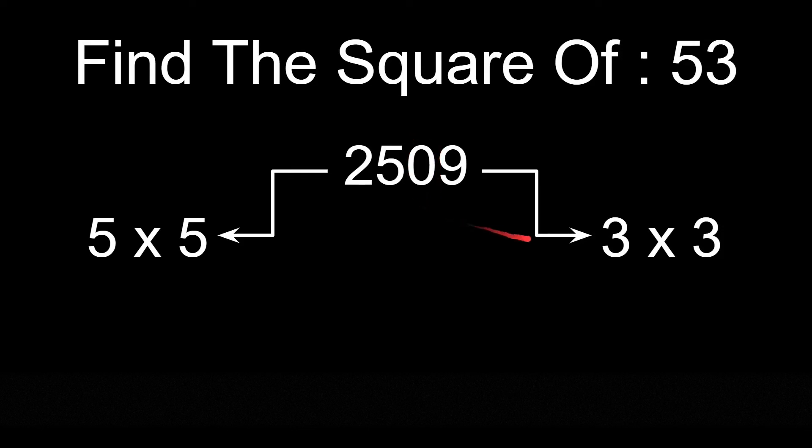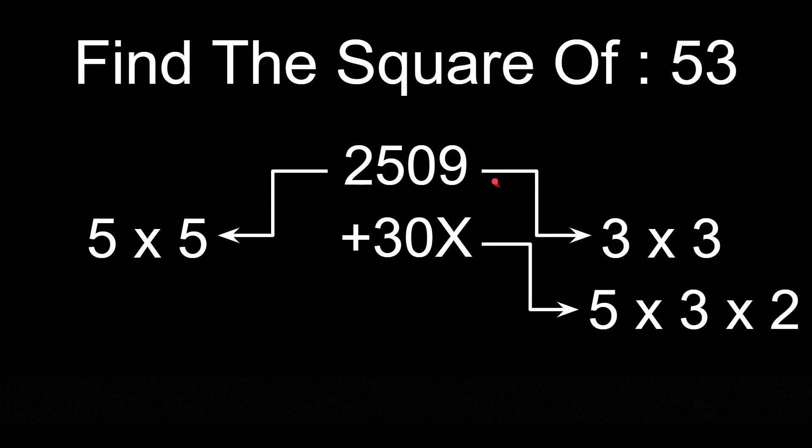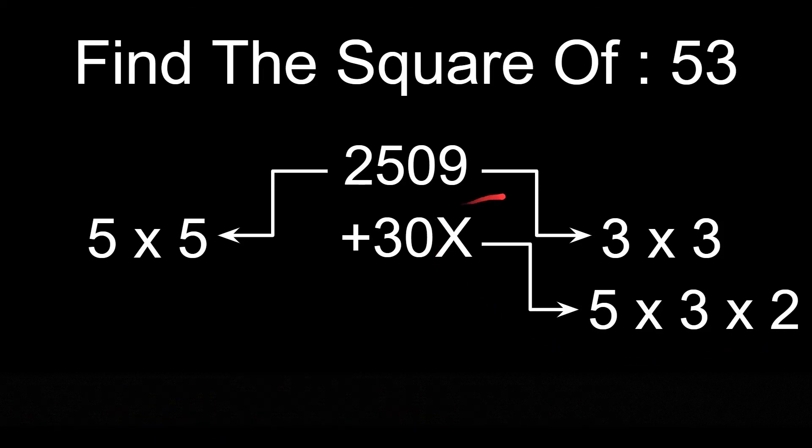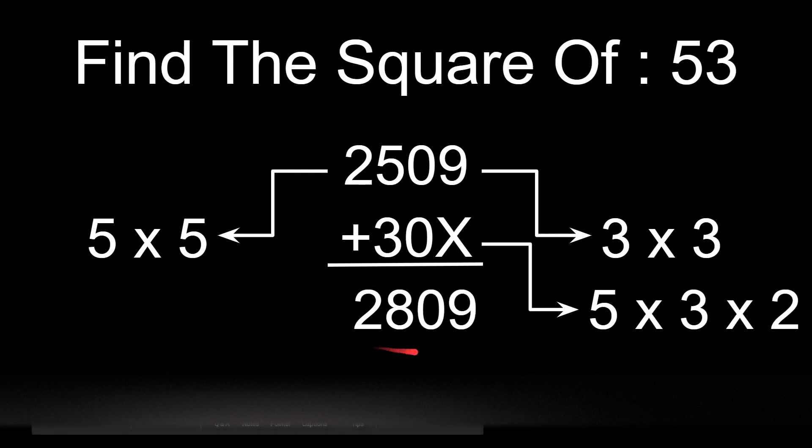And then we will multiply 5 into 3 into 2 and add it from the 10th place. 5 into 3 is 15, into 2 is 30. And we have added it from the 10th place leaving the unit's place as x. And our answer is 2809.